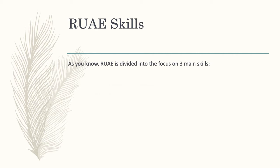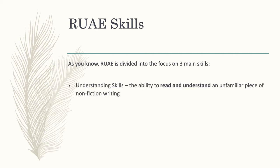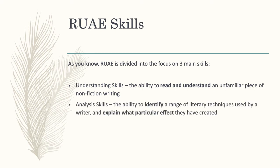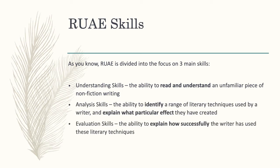As you know, RUI is divided into three main skills: we've got understanding skills, analysis skills, and evaluation skills. So reading and understanding an unfamiliar piece of writing, usually non-fiction. Then analysis — identifying different techniques and explaining why they've been used and what effect they've created. And lastly, evaluation skills — thinking about how successfully the writer has used these different techniques that you have identified and analysed.